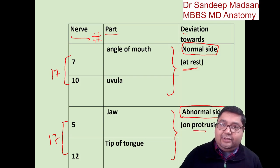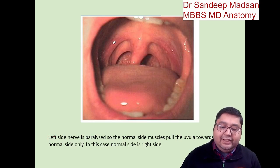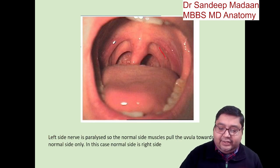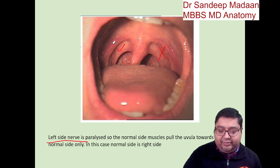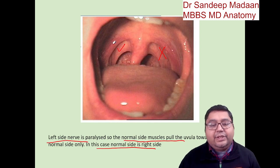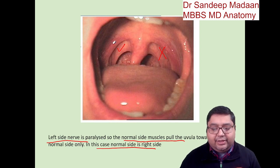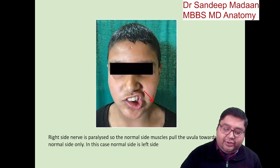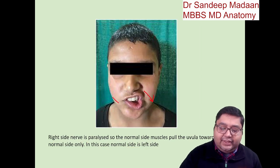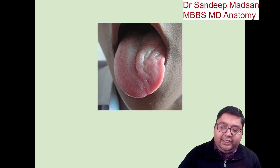Let us look at them one by one. For the uvula — when you ask the patient to open the mouth and say 'ah' — if the left side is paralyzed, the right side muscles pull the uvula towards the right, which is the normal side. So the uvula deviates towards the normal side. The same principle applies to cranial nerve 7.